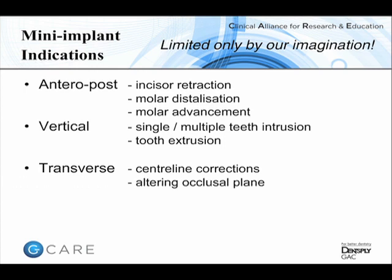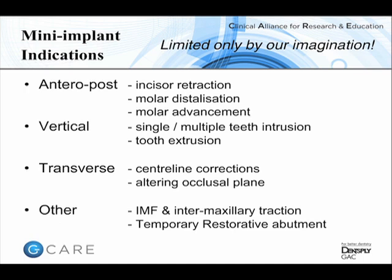It's particularly neat when we want to alter occlusal planes, such as intruding teeth on one side of the arch relative to the other. Depending on clinical case load, there are a variety of other uses, for instance application of Class 2 and Class 3 elastic traction to mini-implants, which can be useful for orthognathic surgical patients. Case reports have also shown restoration of mini-implants — placing a crown in a lateral incisor region — though there's still debate over the optimum process and biology in this respect.